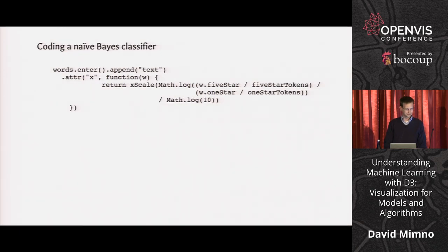So, here's the code that implements this. So, that's D3. I'm taking my words. I'm setting their X attribute to the result of a function. Let's look at it from the inside out. So, I'm taking the number of times this word occurs in five-star documents, divided by the total number of tokens in five-star reviews, dividing that by the number of times it occurs in one-star documents, divided by the proportion in one-star tokens. So, I'm taking that ratio of probabilities, taking the log of that, changing that to log base 10, and then scaling it. So, that's all there is. So, this is using a very complicated algorithm called counting. So, I counted up the words, divided them by the total number of words, and gave ratios. So, this is a very simple algorithm.